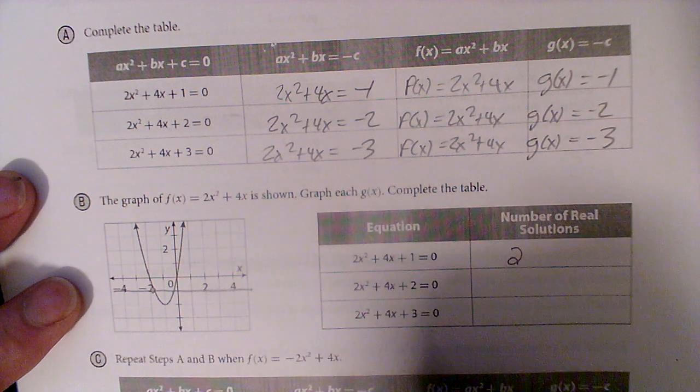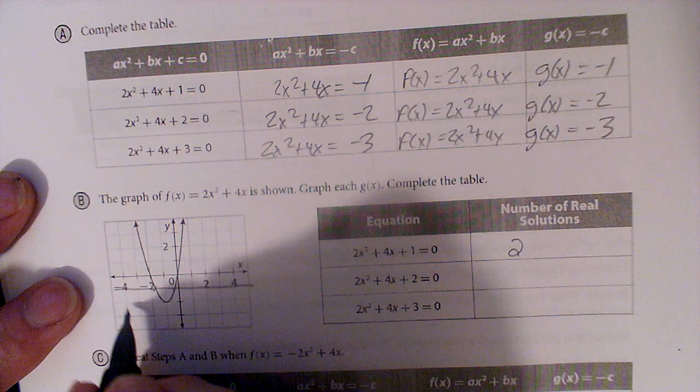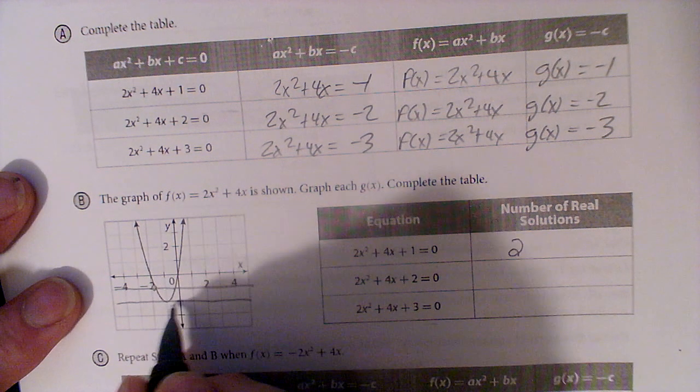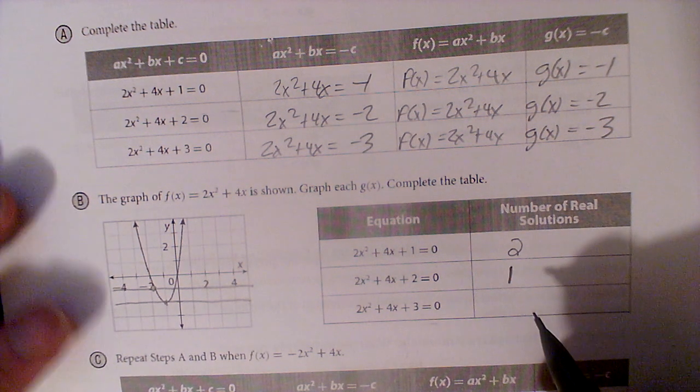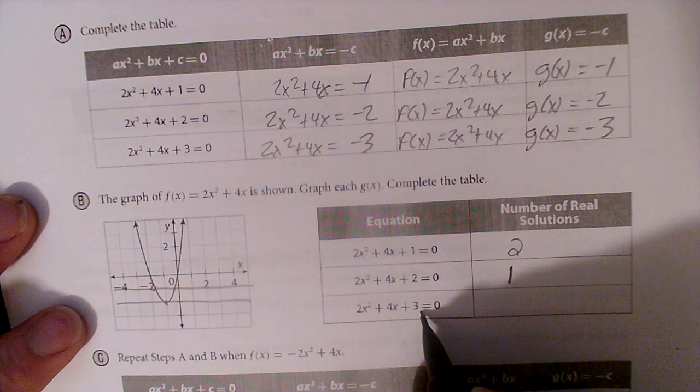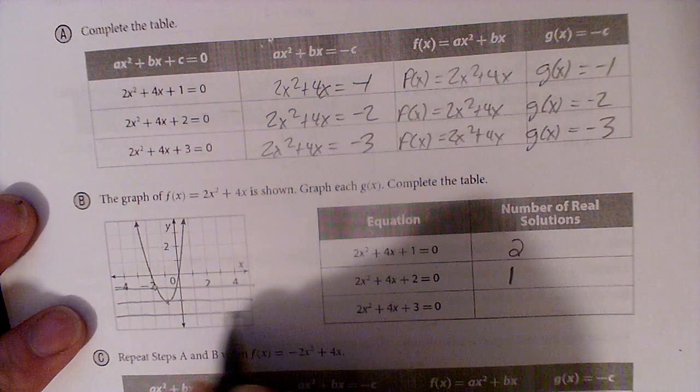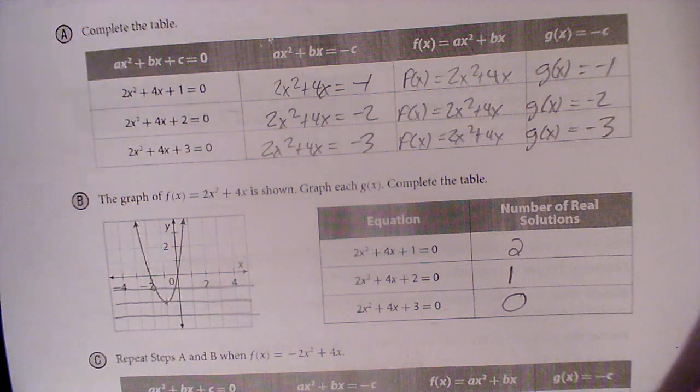The second one, well, this was a negative 2, right? Let's graph negative 2. Only has one solution right there. And the third one, if I put a negative 3, look, they never touch. So there's no real solutions.